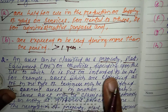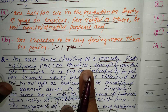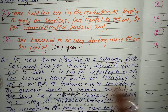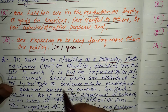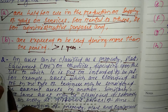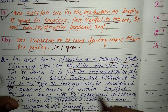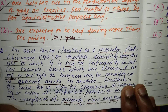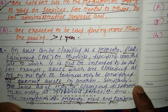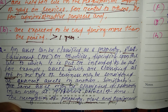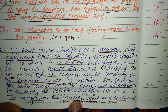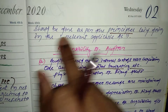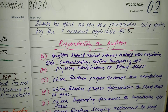An asset can be classified as property, plant and equipment or otherwise depending upon the use to which it is put or intended to be put. For example, assets which are classified as property, plant and equipment in one type of business may be considered as current assets in another company. Similarly, the same asset may be classified differently in an entity at different points of time. The recognition of property, plant and equipment should be done as per the principles laid down in the relevant applicable accounting standards.